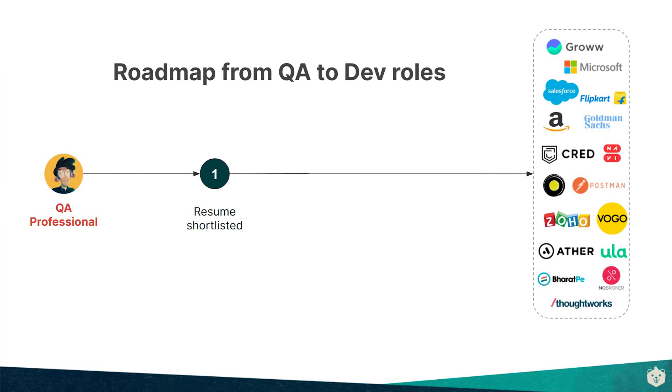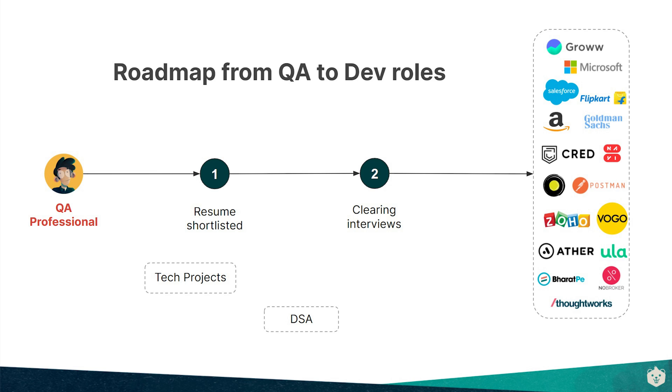Typically for any role, the first step is to get your resume shortlisted and the next would be cracking the interview. To get through these two stages, you need a project to showcase your tech skills, a deep understanding of the tech used in your project, and a strong grasp of data structures and algorithms and system design. Working on projects that demonstrate your development skills will help you stand out and increase the chance of transitioning into a developer role. Remember Ankur or Neha — you chose Neha because of the projects she showed.